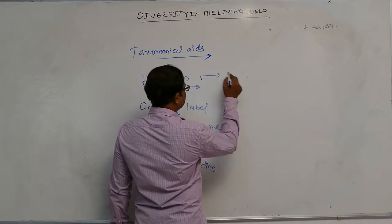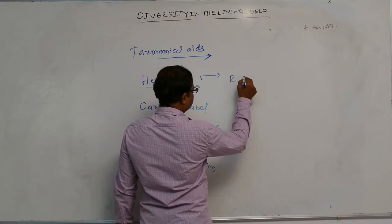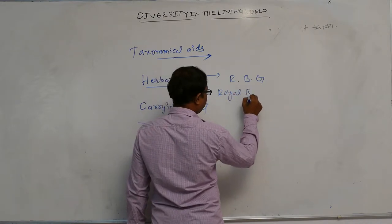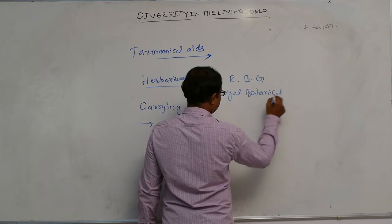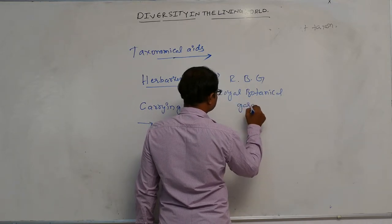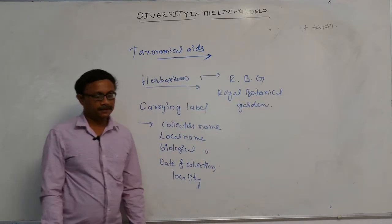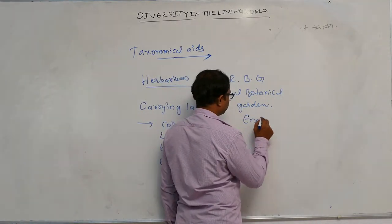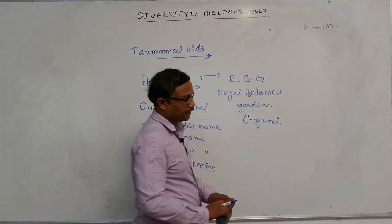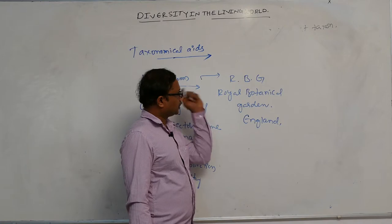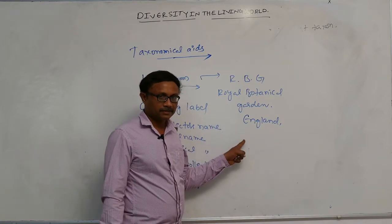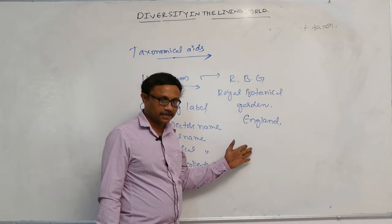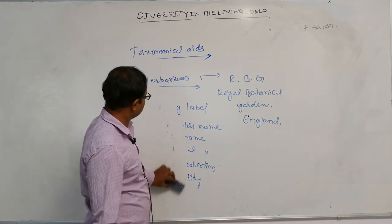RBG stands for the Royal Botanical Garden. It is the largest herbarium in the world and is present in England. It is also an international center for identification of plants.